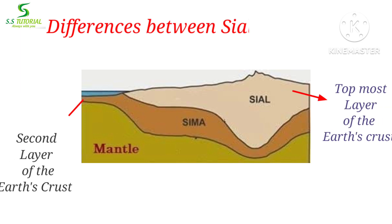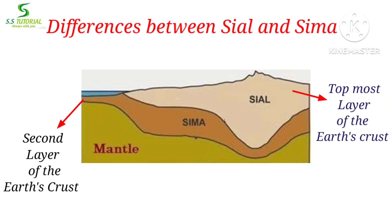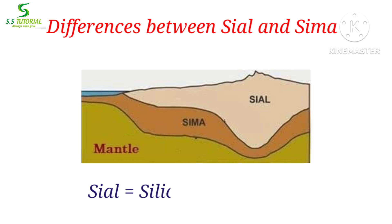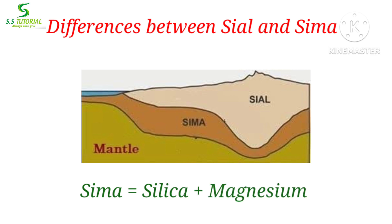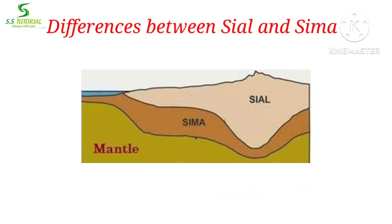Sial is the topmost layer of the earth crust, whereas Sima is lying beneath the Sial. Sial is composed of silica and aluminium — therefore it is known as Sial. Sima is composed of silica and magnesium — therefore it is known as Sima.